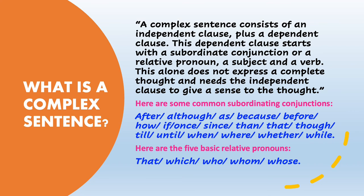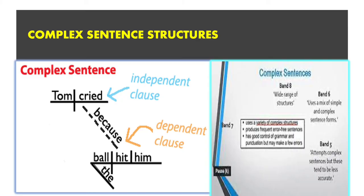Once again, I'd like to remind you of the necessity of using complex structures to achieve the highest score in IELTS. A complex sentence consists of an independent clause plus a dependent clause. This dependent clause starts with a subordinate conjunction or a relative pronoun, a subject, and a verb, but does not express a complete thought without the independent clause. If you attempt complex sentences with less accuracy, you drop to band 5. If you use a mix of simple and complex sentence forms, you reach band 6. To reach band 7, you need frequent error-free variety of complex structures with few grammatical errors. For band 8, you need a wide range of structures.